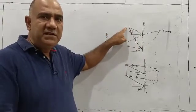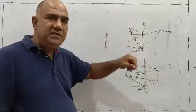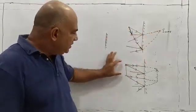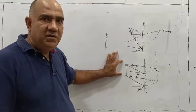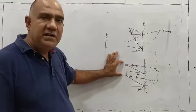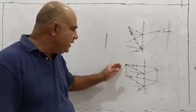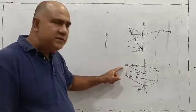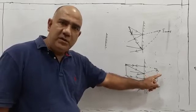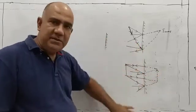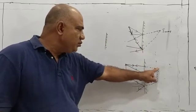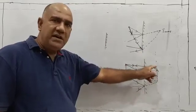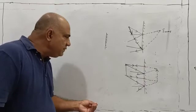A plane mirror can form an image of a point object — a point object is a very small object indicated by a dot, and its image is found behind the mirror. Similarly, for an extended or finite object, which has considerable size indicated by an upward-pointing arrow, every point of the object creates a corresponding image point. To keep the diagram simple, we consider only the top and bottom points.